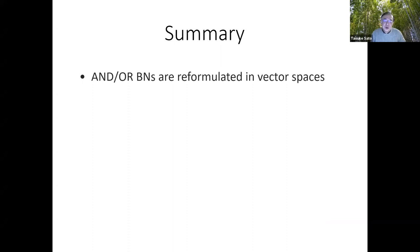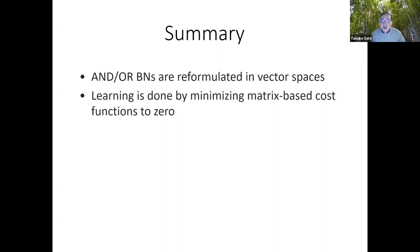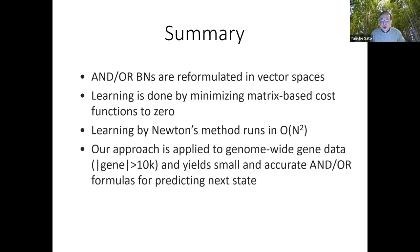So summary. We reformulate learning Boolean networks in vector spaces. We learned them by minimizing cost function to zero using Newton's method, which runs in order N squared. We applied our approach to real data, genome-wide gene data containing more than 10,000 genes and obtained small and accurate AND/ORs that can predict the next state of more than 6,000 genes with prediction accuracy 95% on average.